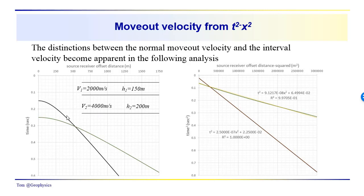The reflection from the base of this upper layer has an asymptote that is the direct arrival, which runs out along the surface. So we would have a direct arrival that comes down and parallels the reflection at long offsets.